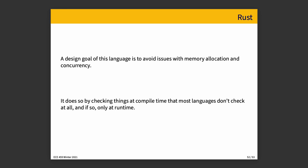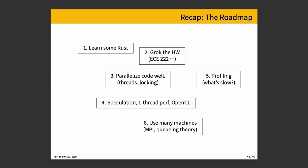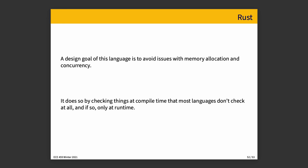The goal of Rust is to make it easier for you to write your program in a safe and correct way by checking things at compile time that most languages don't check at all, and if they do, only at runtime. As we go through Rust, we're going to encounter some trade-offs. Sometimes the trade-offs work in your favor, and sometimes they won't. In particular, you will find some things are harder to write in Rust than they would be in C or C++. However, they are more likely to be correct — and whether that's worth it depends on your context.